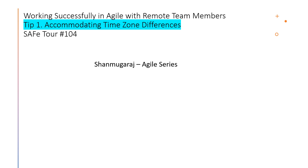We are discussing topics from SAFe 6.0. We started discussing how to go about working successfully in agile when you have remote team members, and we also discussed four options to improve the effectiveness of working. The first one was accommodating the time zone differences, and that is what we're going to discuss in today's video.